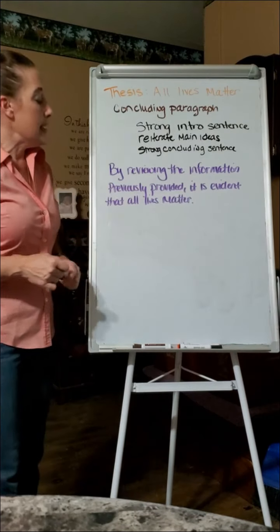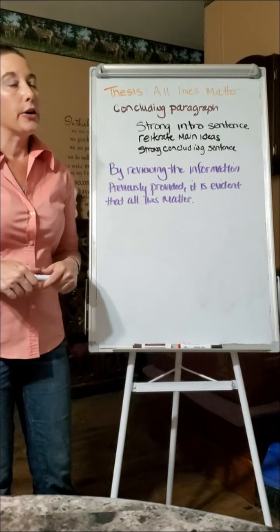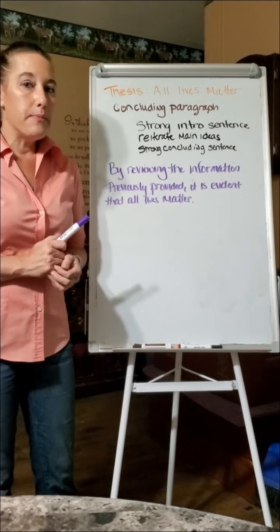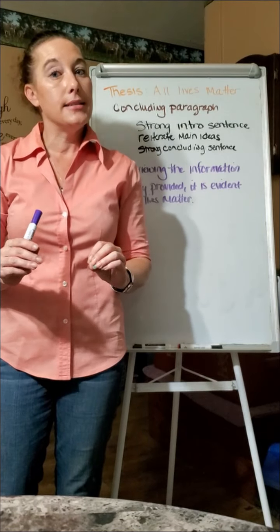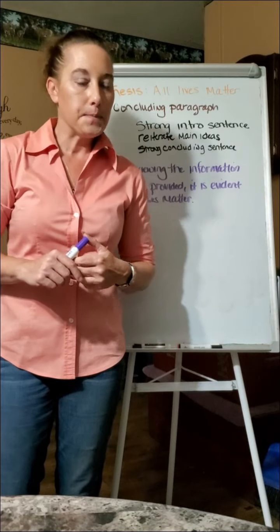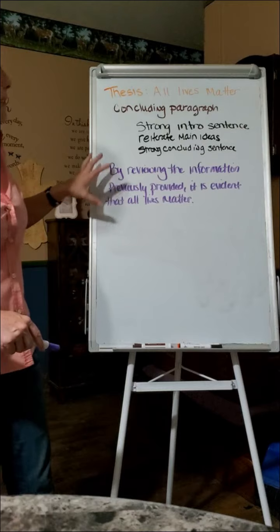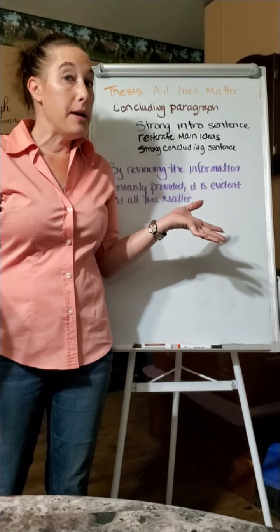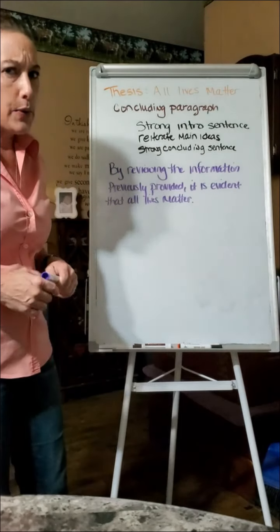So, by reviewing the information previously provided, it is evident that all lives matter. So, that is going to be my beginning sentence because what I am doing is I am wrapping up the entire idea again. So, I am sort of revisiting my thesis statement again. Because I am now saying, okay, well I am giving you all the information. It is obvious that I am right. And here is why.